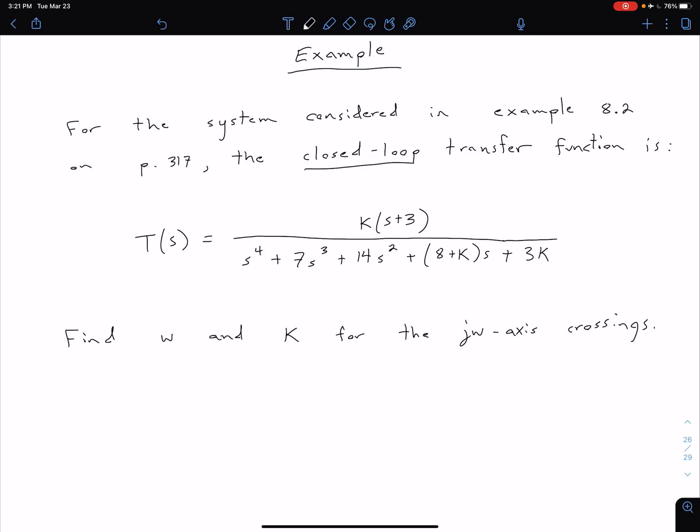Let's now take a look at an example and see if we can find some more accurate information about some j-omega axis crossings. We're going to look at a system that is actually from an earlier example in the textbook, example 8.2 on page 317 in the 8th edition text.